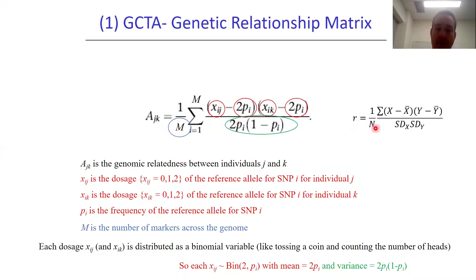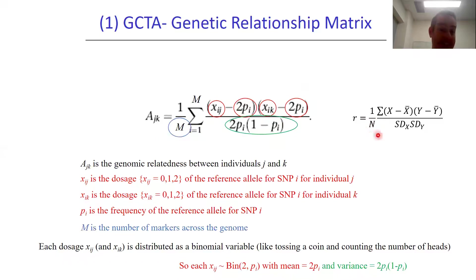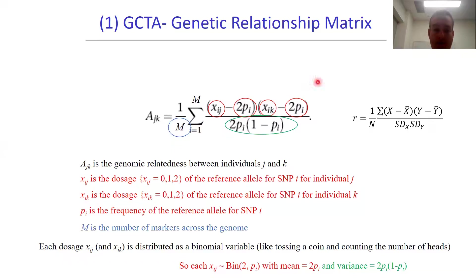Putting up the formula for the Pearson correlation coefficient again, you can see that these two expressions are extremely similar. Here we're dividing over M genetic markers, whereas in Pearson we're dividing over N individuals. The expressions in the numerator and denominator are exactly equivalent. In the next series of slides, I'll be talking about the variance components model underlying the GCTA software package.